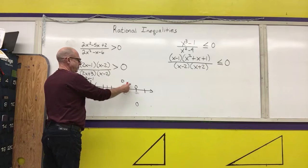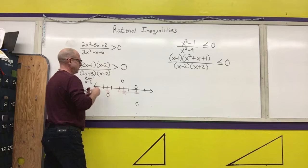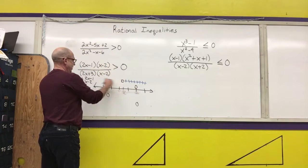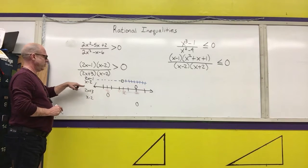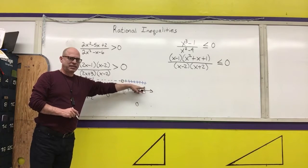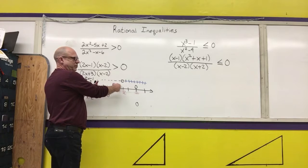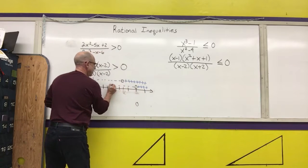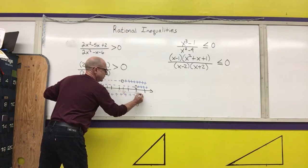2x minus 1 is zero at one-half. If I put a number to the right, like 1, I get 2 minus 1, which is positive. Anything to the left gives a negative number. Any time you have a linear term where the coefficient in front of x is positive, everything to the right of the zero is positive and everything to the left is negative. If the coefficient is negative, then left is positive and right is negative. So all of these are linear terms.